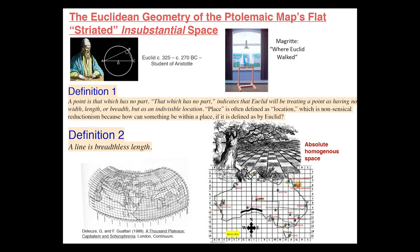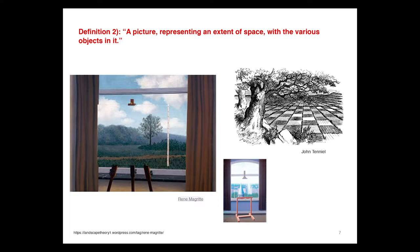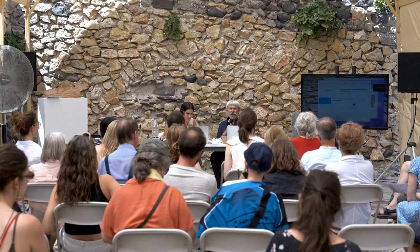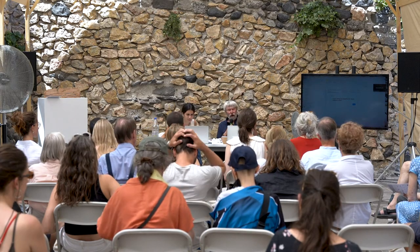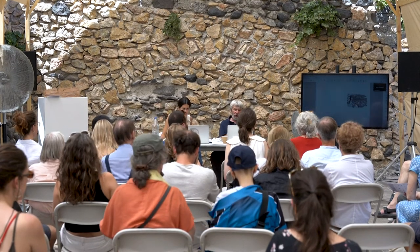Johnson's definition two: 'a picture representing an extent of space with the various objects in it.' The Alice in Wonderland illustration shows that very well. I also have a painting by René Magritte called 'Where Euclid Walked,' showing a boulevard in Paris after Haussmann got hold of it — he destroyed much of Paris and made straight boulevards so you could shoot cannonballs down them. Artists made drawings using Euclidean geometry, and then they get replicated and people start building that way.